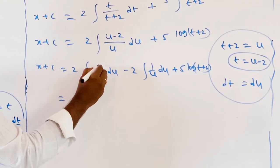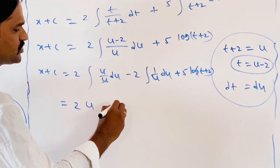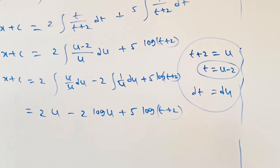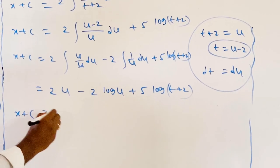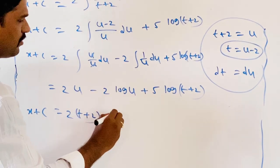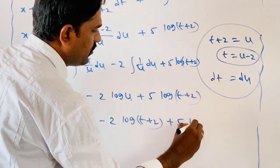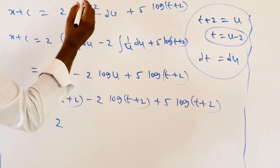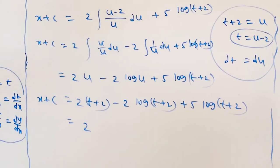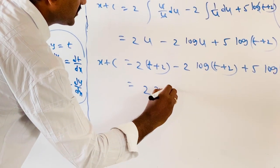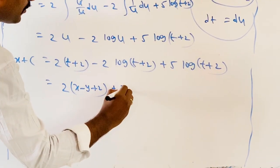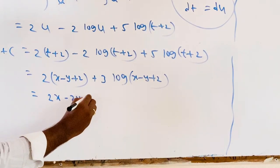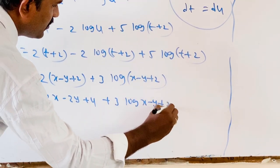Substituting back u = t + 2: the expression becomes 2(t + 2) − 2 log(t + 2) + 5 log(t + 2). Combining the log terms: 5 log(t + 2) − 2 log(t + 2) = 3 log(t + 2). Replacing t = x − y: 2(x − y + 2) + 3 log(x − y + 2). Multiplying out: 2x − 2y + 4 + 3 log(x − y + 2).